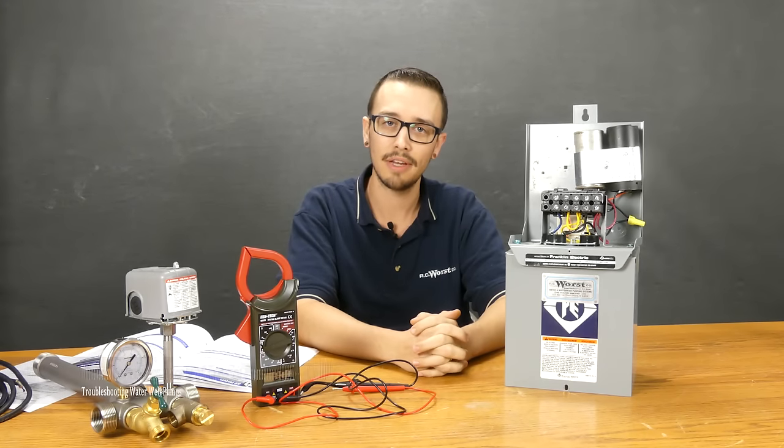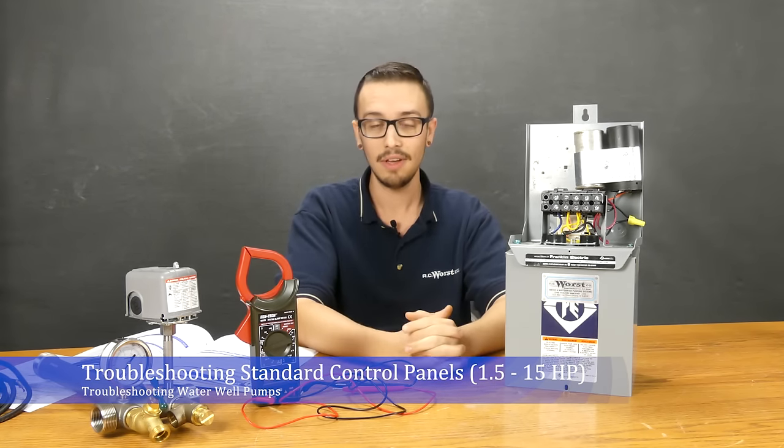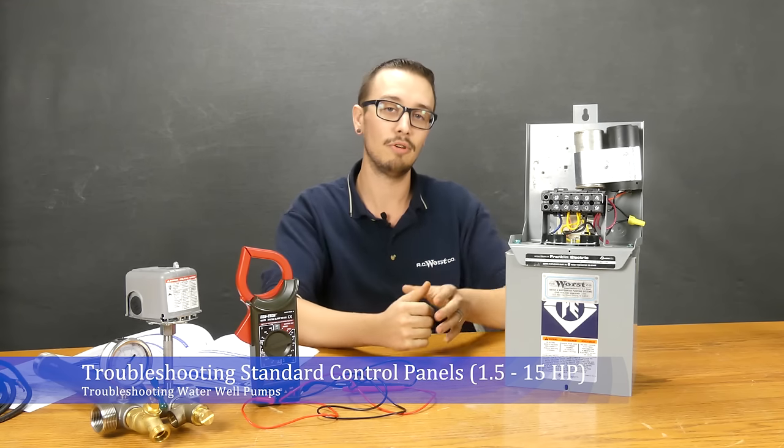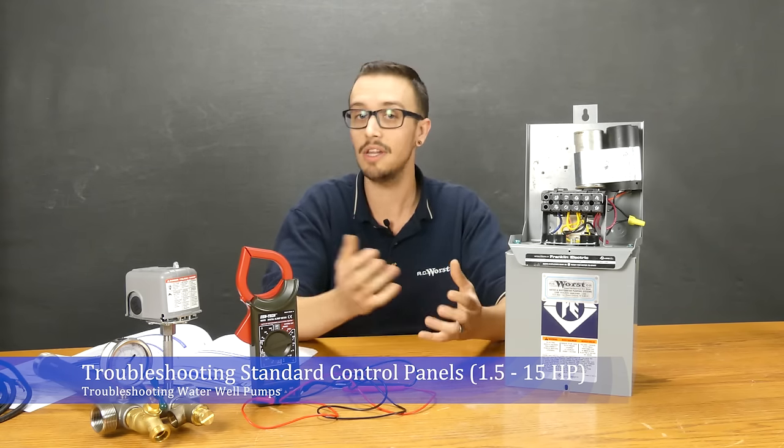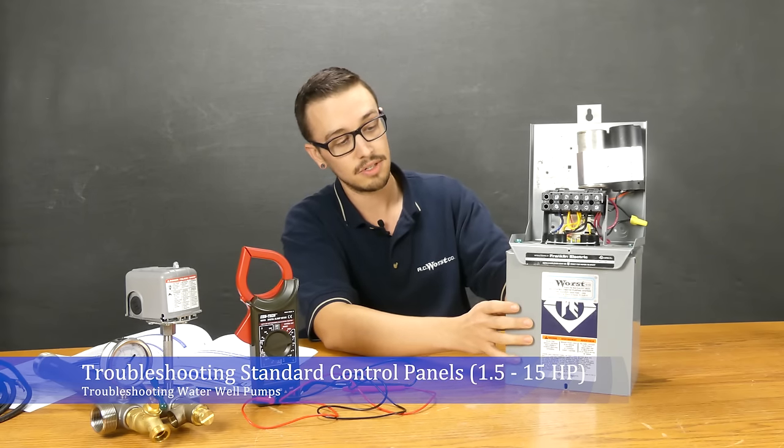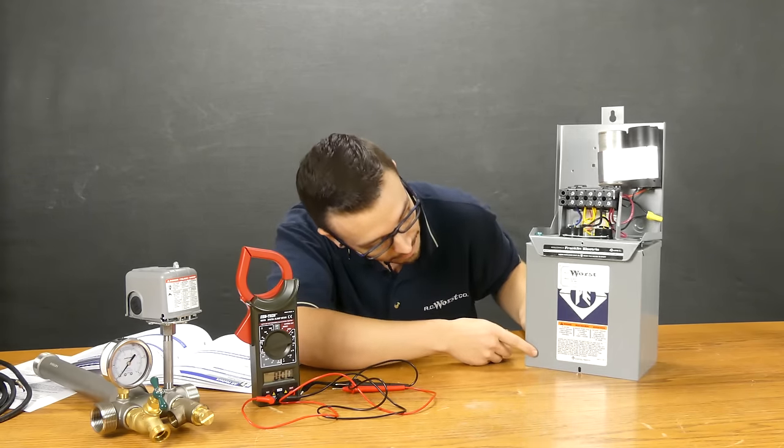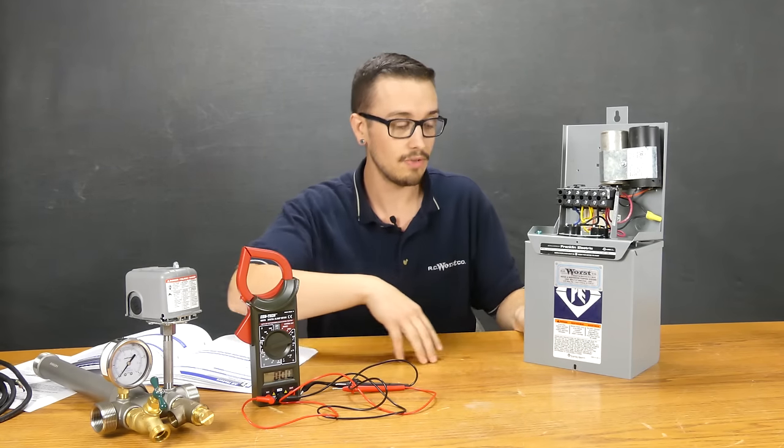Hey, Chris with RC Worst here, and welcome to another troubleshooting your well system video. Today we're going to talk about Franklin Electric's standard control boxes. These control boxes are available from 1.5 horsepower all the way up through 15 horsepower, and these troubleshooting techniques will allow you to test any one of those boxes. This particular box is a 3 horsepower control box, 230 volts.